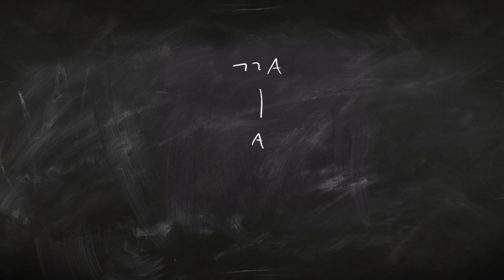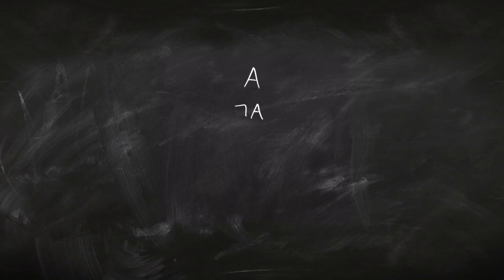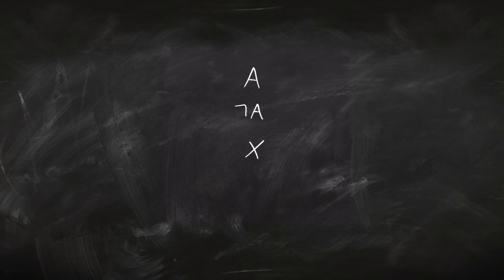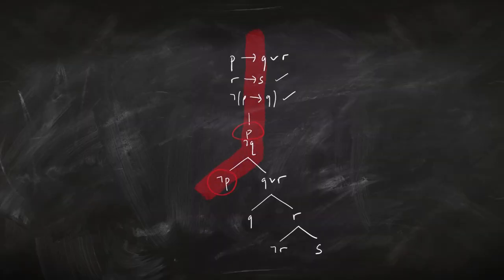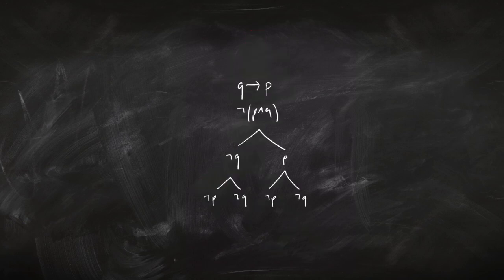Two more rules for negation. If you have a double negation, not-not-A, that's simple — you just add A to your tree. The final rule, perhaps the most important: if you're looking down a branch in your tree and you have a contradiction — A and not-A — you say that branch is closed and put an X at the bottom. A branch is a path through the tree right from the top down to the bottom. So here if we've got a contradiction, we close that branch. But a contradiction that doesn't lie on a single branch doesn't allow us to close anything.